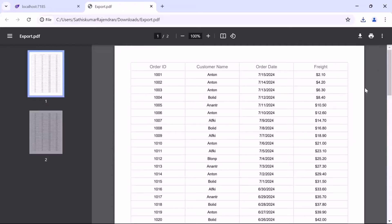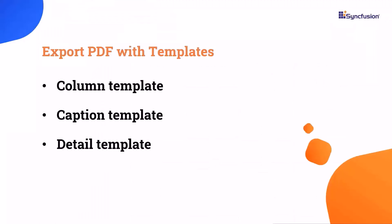Next, I will show you how to export the Blazor DataGrid with custom templates to a PDF document. The grid provides features to export various templates to a PDF document, including column, caption, and detail template. Now I am going to explain each template.